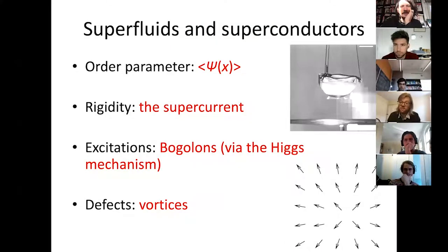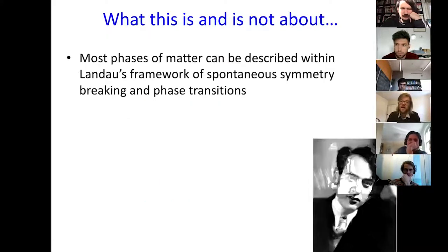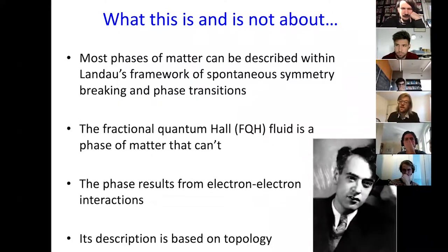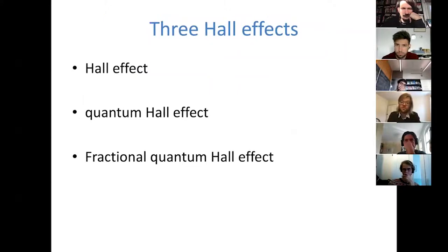You can play this game with many phases of matter — superfluids and superconductors, where the rigidity is the supercurrent, excitations are Bogoliubov quasiparticles, and defects are vortices. But the fractional quantum Hall fluid isn't like this. It's a phase of matter that cannot be described within this symmetry-breaking framework. We know it must come in some sense from electron-electron interactions, but its description is based not on symmetry but on topology — the study of the overall shapes of spaces and objects.